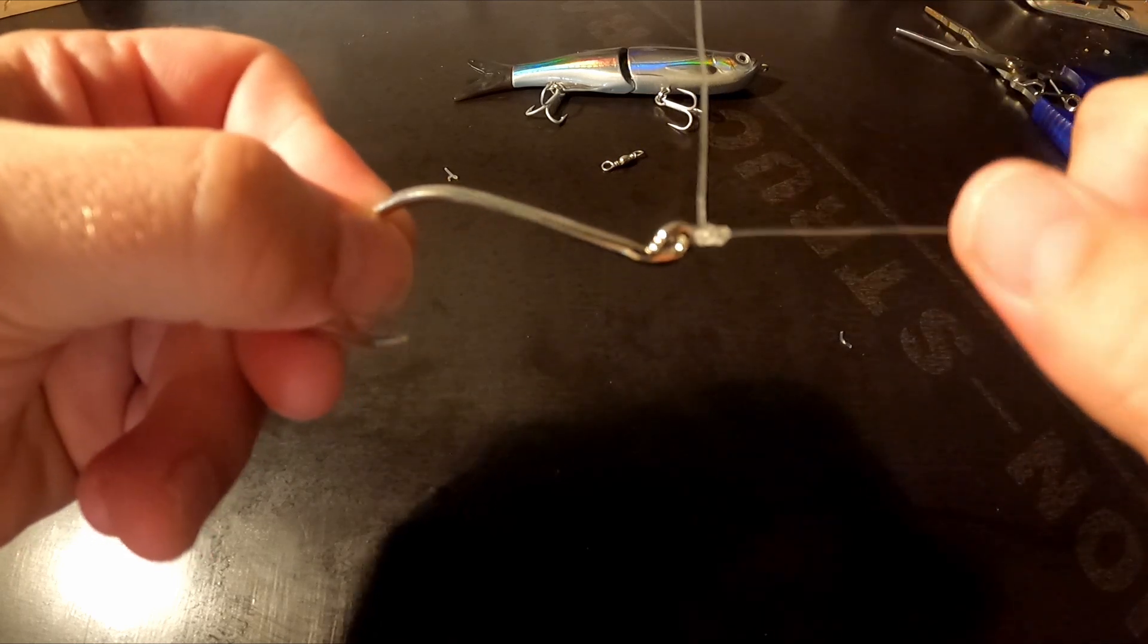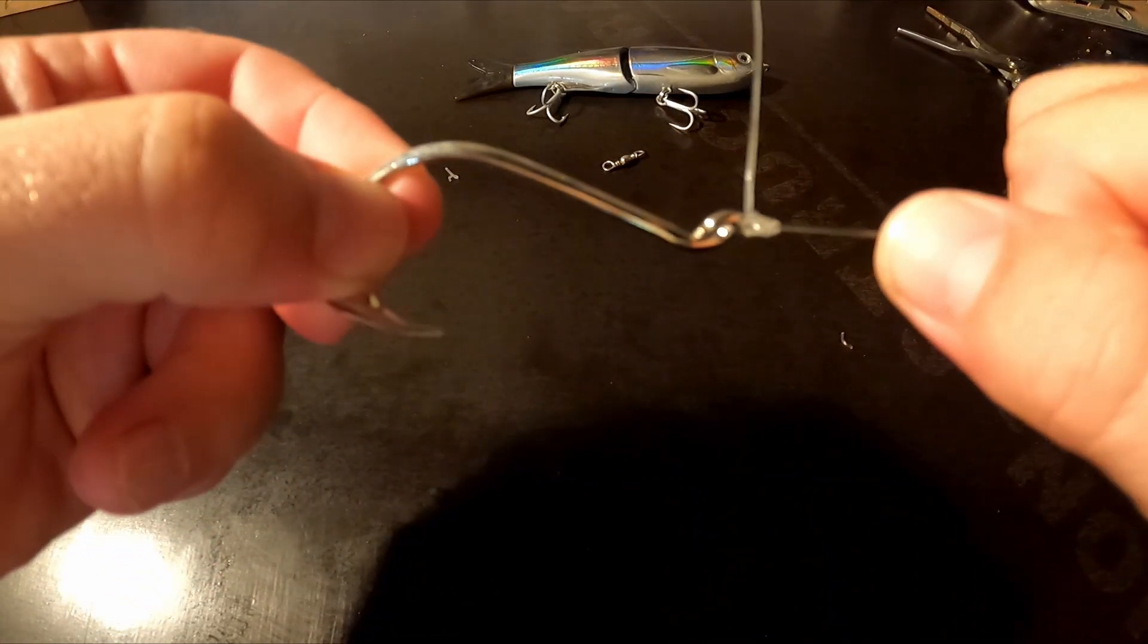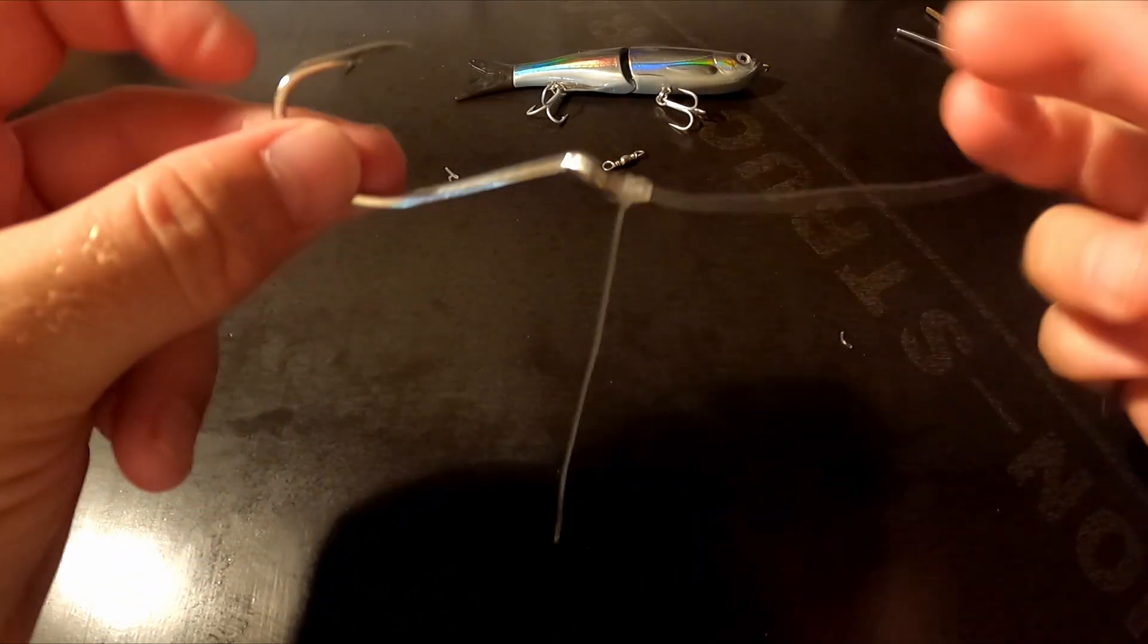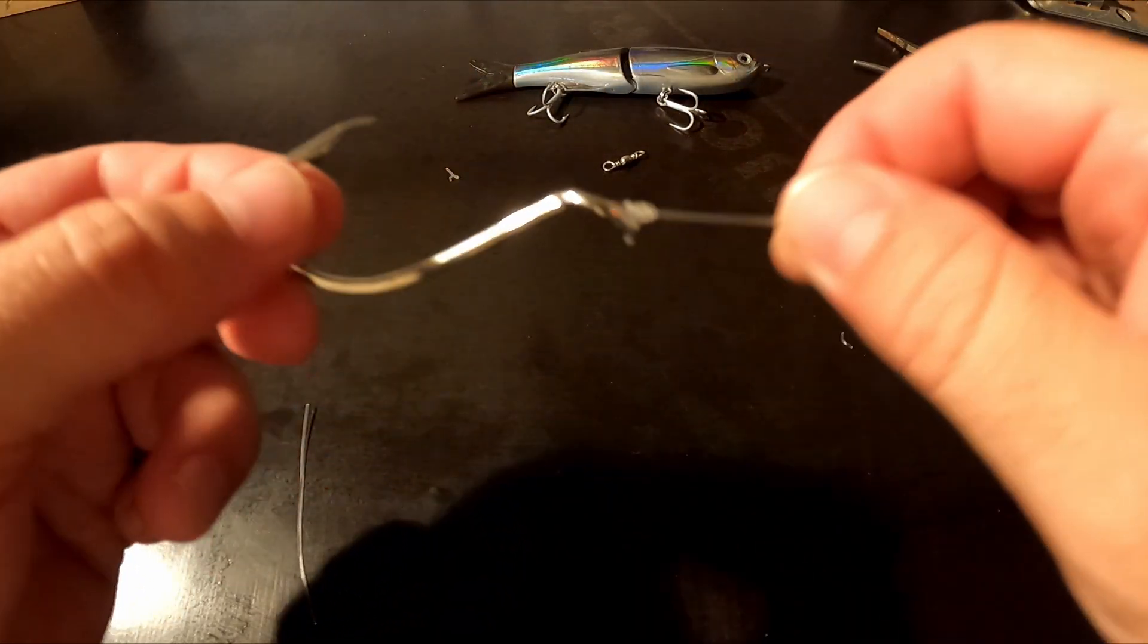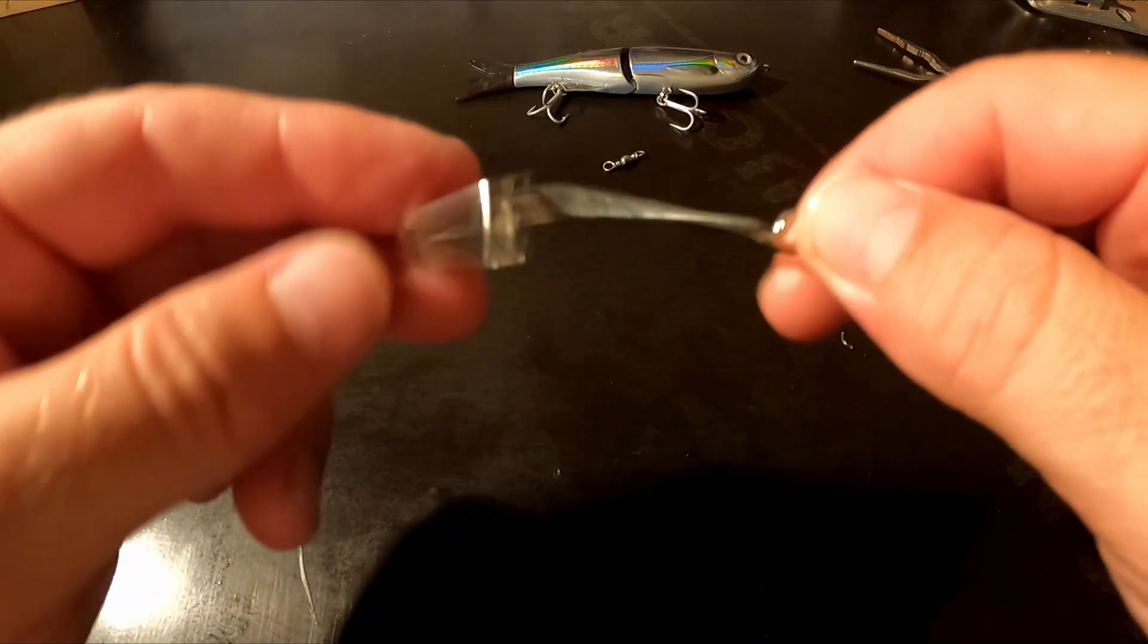Of course, lubricating before you tighten. It's a little bit tricky because you've got to pull the tag and the main line together. And that's your locked half blood knot. I've had no issues with this knot from slipping. Takes a little extra step, but on heavier lines it's well worth doing.